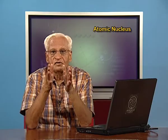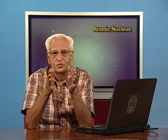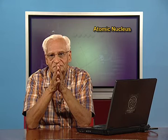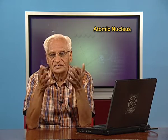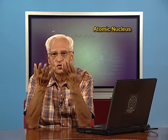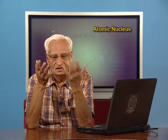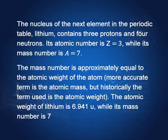So far we have progressed only to helium. Let us see what happens if we go further — say Z equals three. The nucleus of the next element in the periodic table, lithium, contains three protons and four neutrons. Its atomic number is three and its mass number is seven.